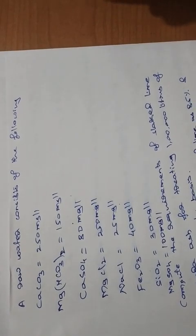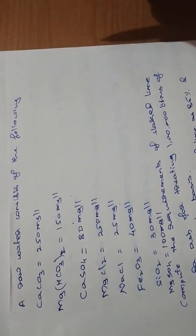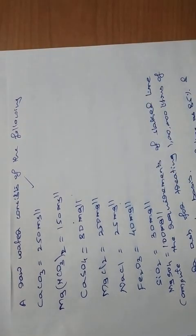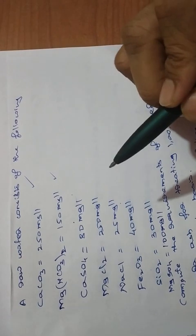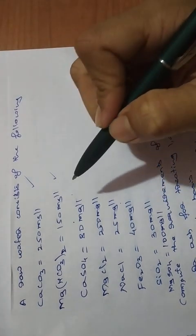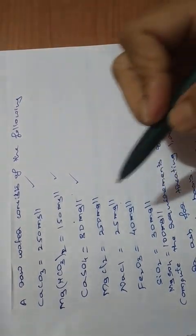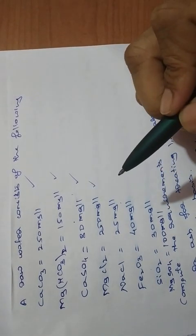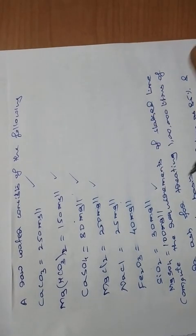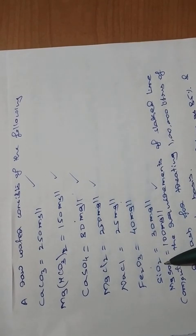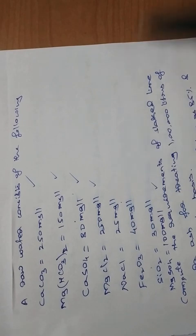Before going further, we should understand which chemical imparts hardness. Calcium carbonate imparts hardness. Magnesium bicarbonate imparts hardness. Calcium sulphate imparts hardness. Magnesium chloride imparts hardness. Magnesium sulphate imparts hardness. That means NaCl, Fe2O3, and SiO2 will not impact the hardness.